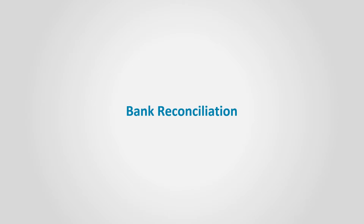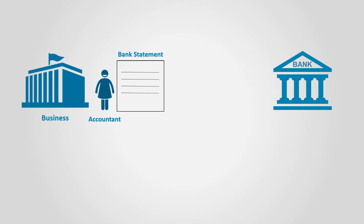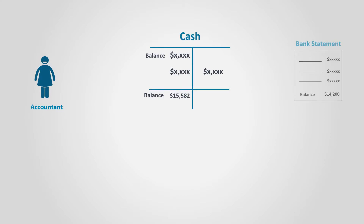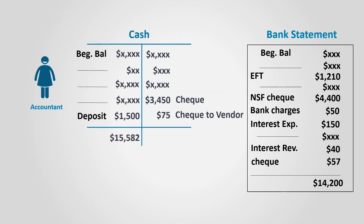Bank Reconciliation. The business receives a bank statement from the bank, or it can just print it online. The accountant compares the bank statement with the transactions recorded in the cash account. After comparing, the accountant discovers a difference between the balance shown in the bank statement and the cash account shown in the business books. This is due to entries in the bank statement not found in the cash account, and vice versa.